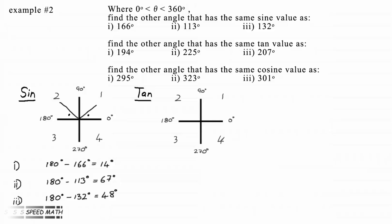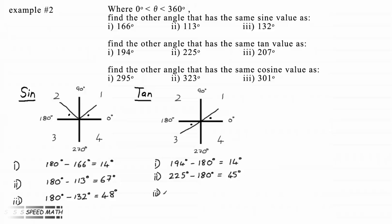All the angles in the second part are reflex and in the third quadrant. Their tan values are all positive in this quadrant. They have the very same values as the acute angles in quadrant 1. The acute angle that the radius makes with the x-axis is vertically opposite to the acute angle in the first quadrant, so we subtract 180 degrees from the angle. Our required angles are: 194 minus 180 equals 14 degrees; 225 minus 180 equals 45 degrees; and 207 minus 180 equals 27 degrees.